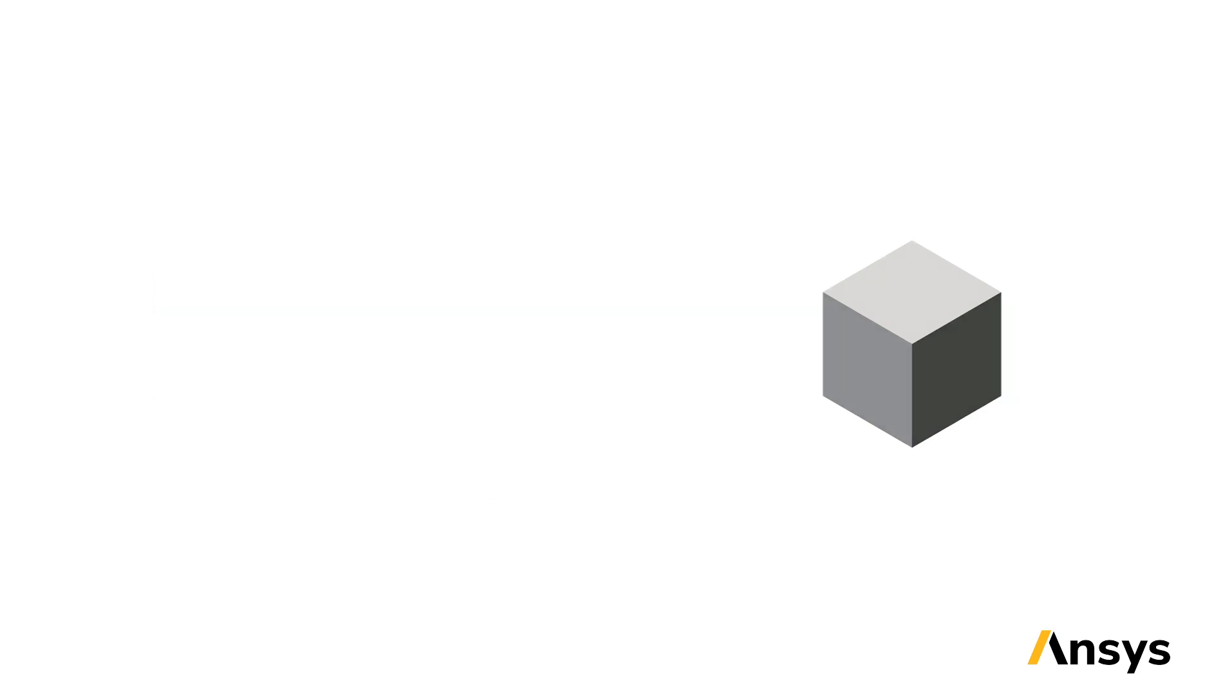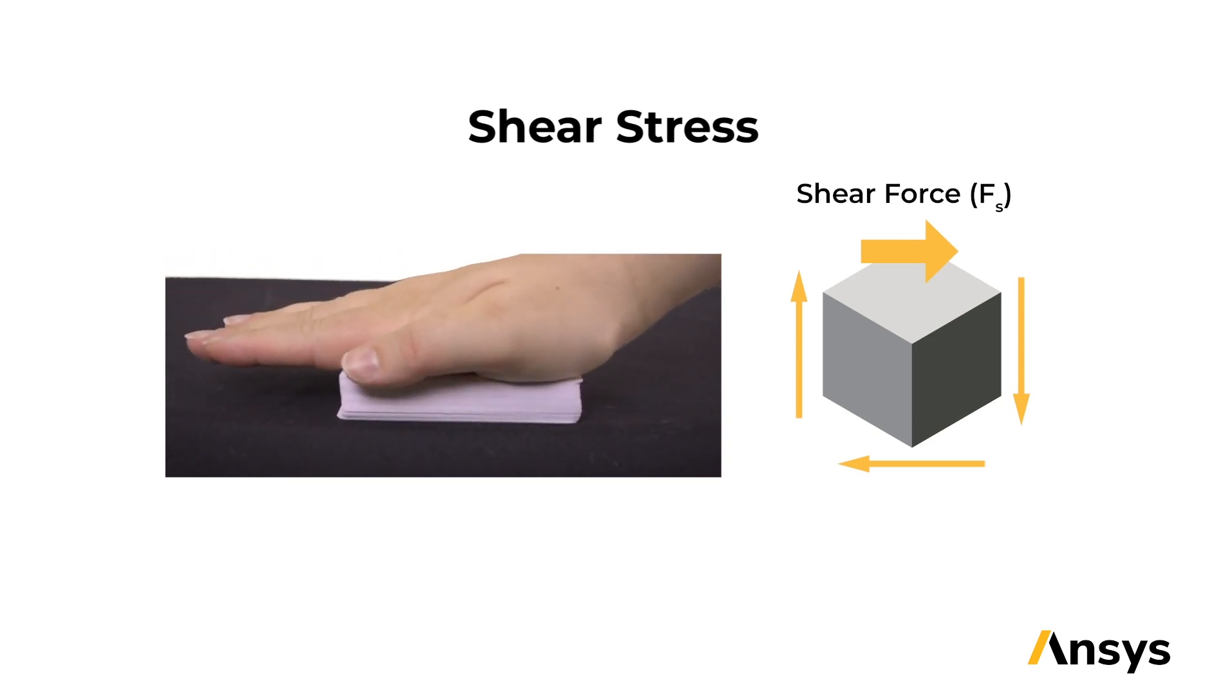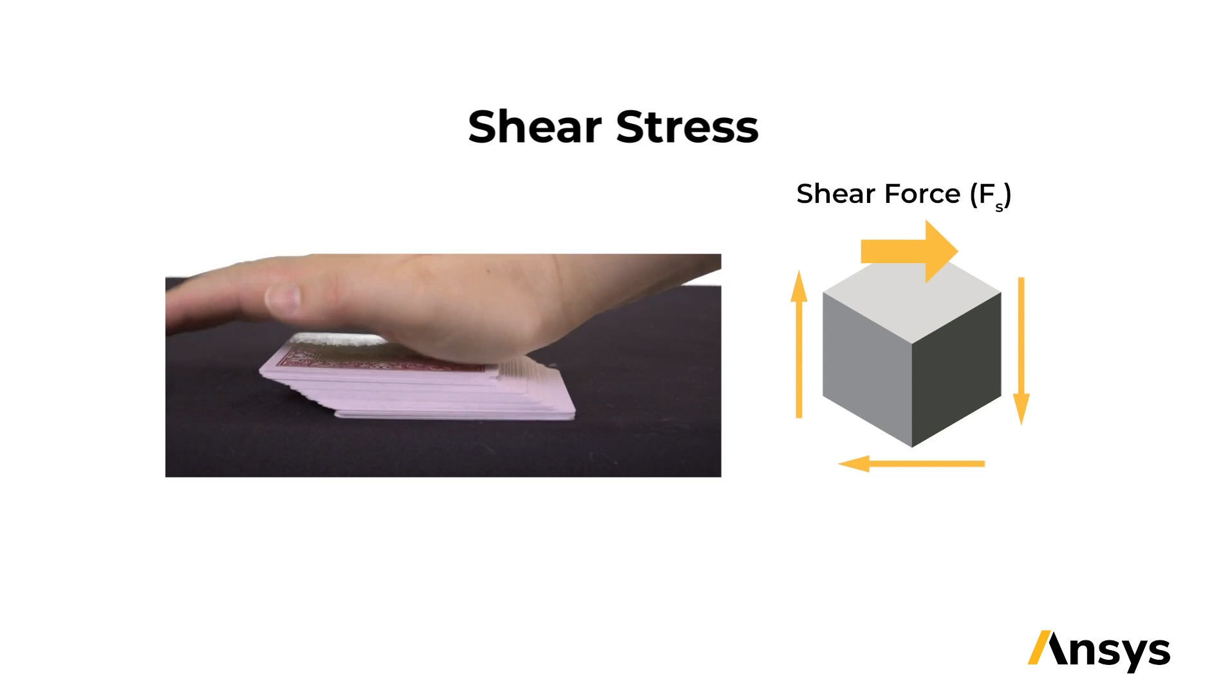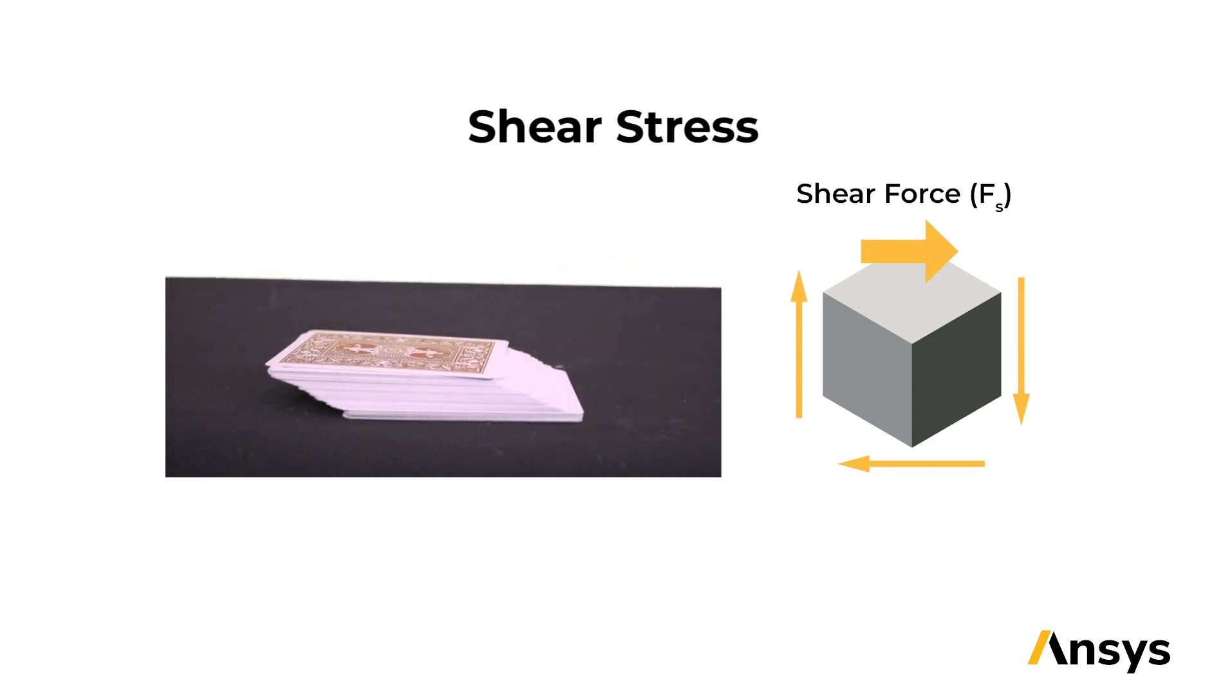Shear stress occurs when the force is parallel to the material surface. In this situation, I need 3 other forces to maintain equilibrium of my solid. Shear stress is notated by lowercase tau, and once again is our shear force F divided by A0. A way to visualize this is with a deck of playing cards. If I place the palm of my hand on the top of the deck, and slide my hand in the direction parallel to the tabletop, the cards slide in this slanted motion. This type of motion is indicative of shear stress.